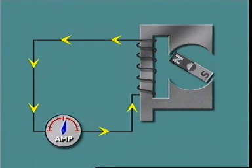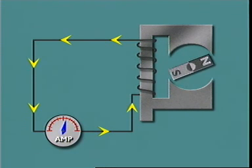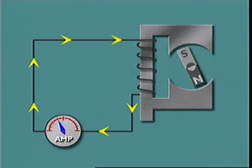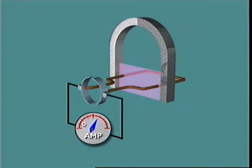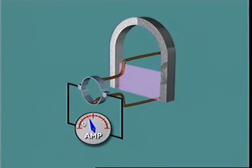Move a magnet so that the magnetic lines of force cut across a conductor, as in an alternator. Move the conductor so that it cuts across the stationary magnetic field, as in a generator.